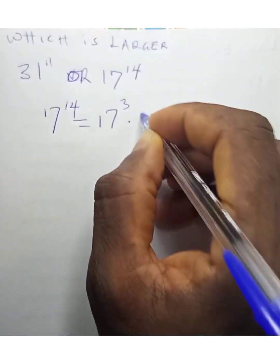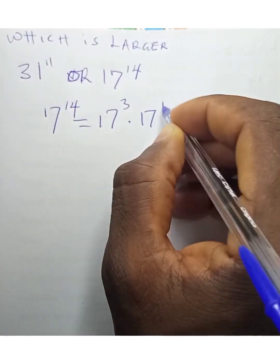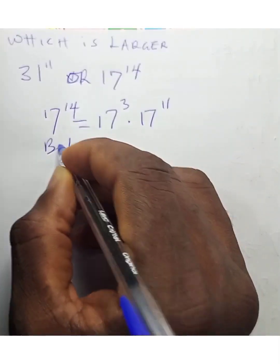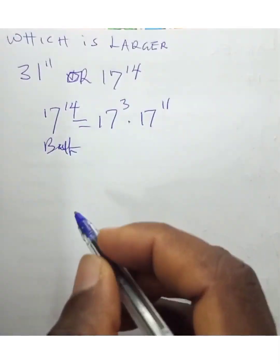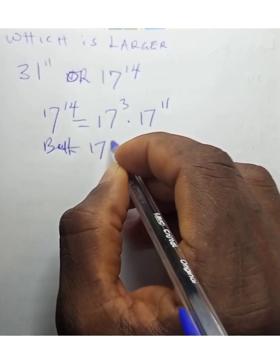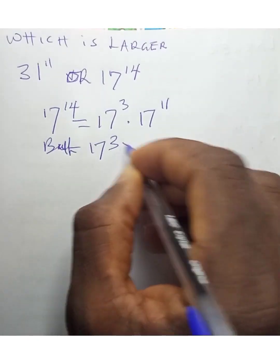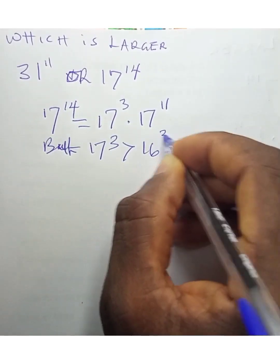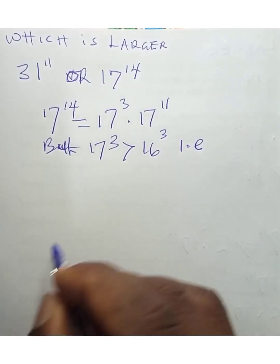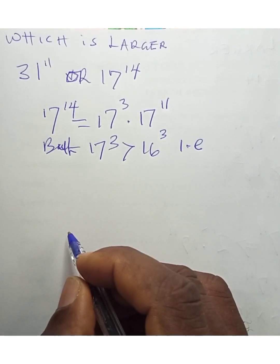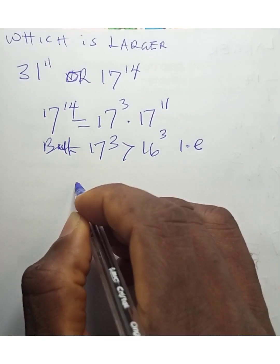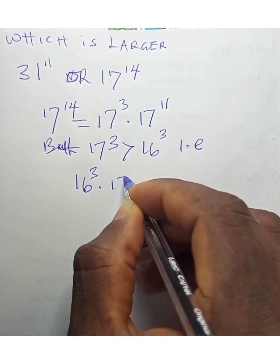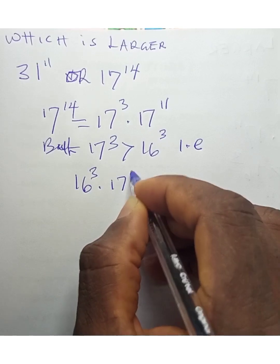Now, 17 to the power of 3 is greater than 16 to the power of 3. So what we are going to have here is 16 to the power of 3 times 17 to the power of 11.